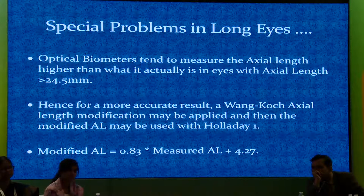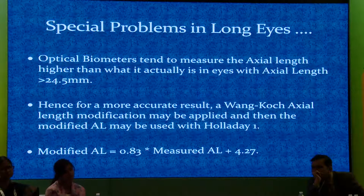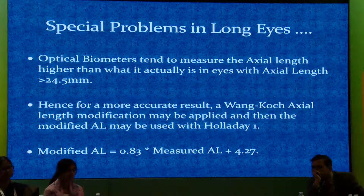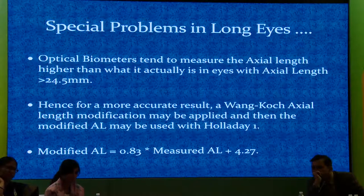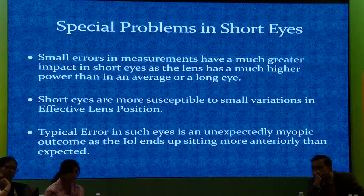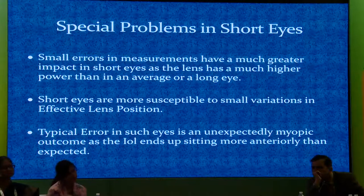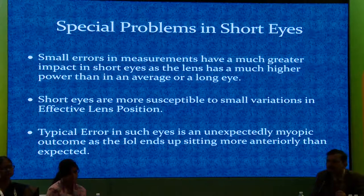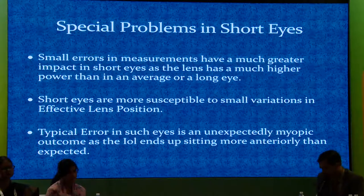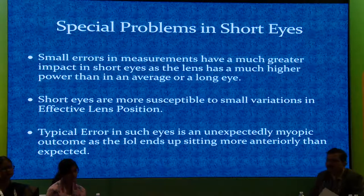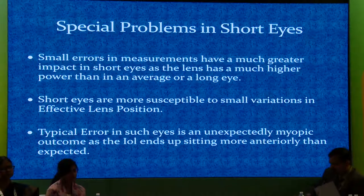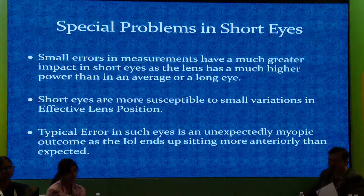A special problem in long eyes is that optical biometers tend to measure axial length higher above 24.5; hence a correction factor — axial length modification — can be applied. For short eyes, the lens power is much higher, which changes the reading and your results. The short eye is more susceptible to small variations in effective lens position, and a typical unexpected myopic outcome occurs when the IOL sits a little more anteriorly.